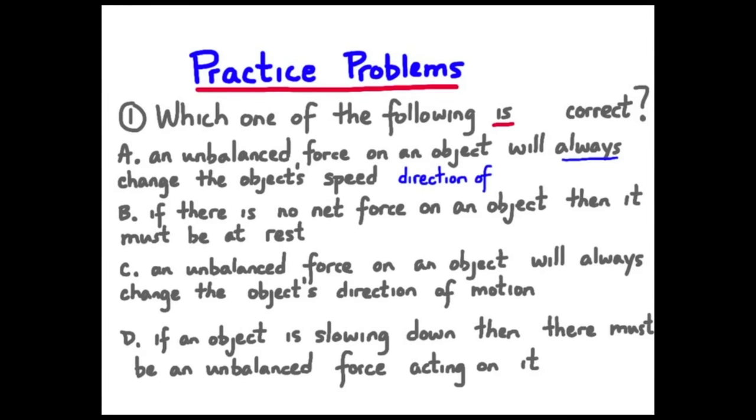Always is an important word, and we'll highlight that. Well, we know an unbalanced force will always change the object's velocity. But you could have the speed or the magnitude part of velocity staying the same, but direction changing. Circular motion is an example, and we'll look at circular motion later.